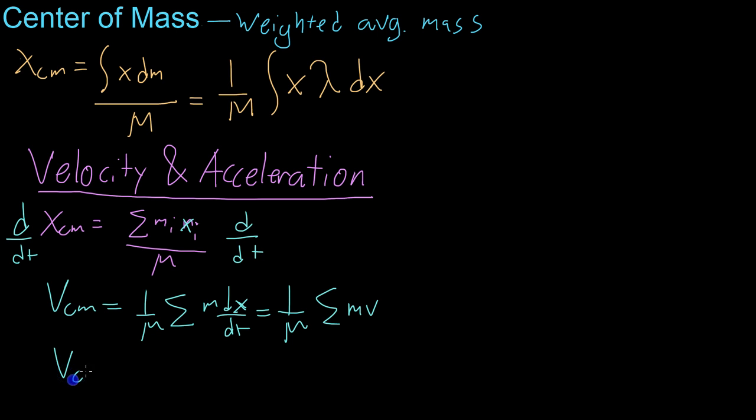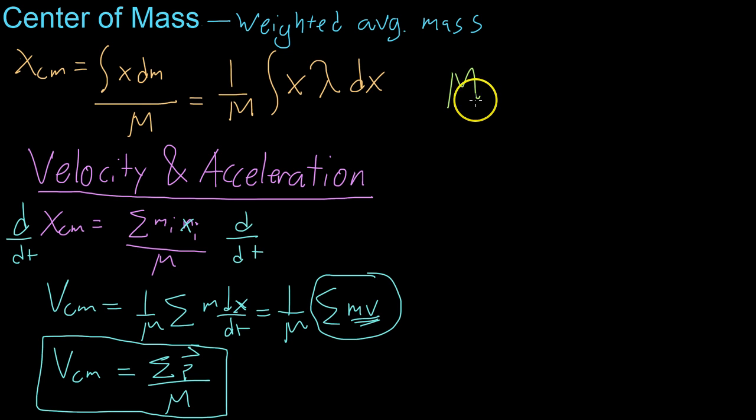So, this becomes 1 over m times the sum of m times v. Or, the velocity of the center of mass, because we know that sigma mv is basically the sum of the momenta, because m times v is momentum, we get that the velocity of the center of mass is the sum of the momentum vectors over the total mass of the system. Or, alternately, multiplying up by the total mass of the system, we can say the mass times the velocity of the center of mass equals the sum of the momentum. Or, when you sum all the momentum vectors of all the individual particles moving about in a system, you're going to get the total momentum of the center of mass. And, this also means